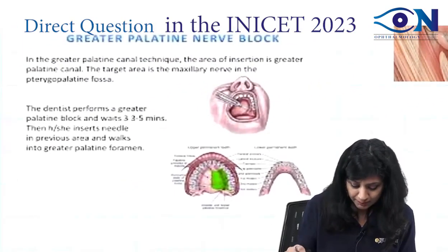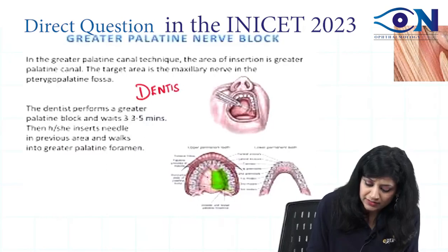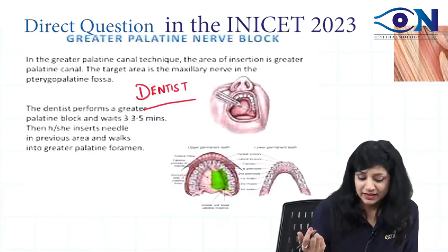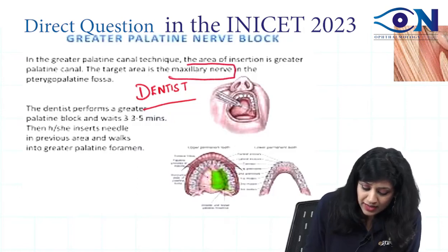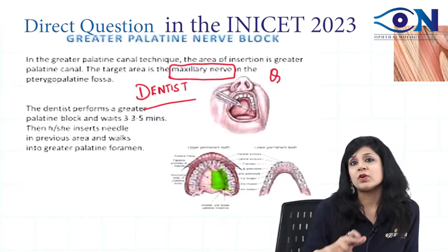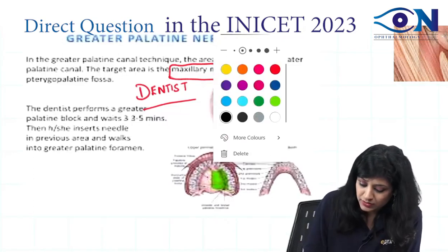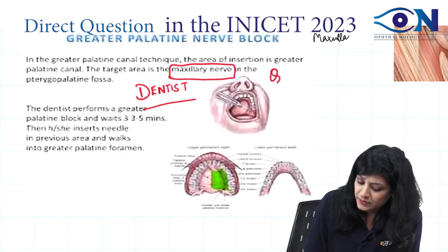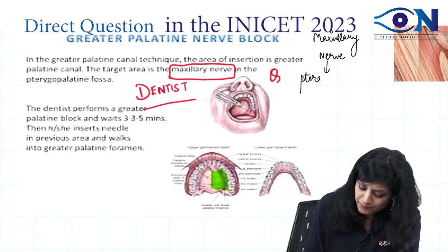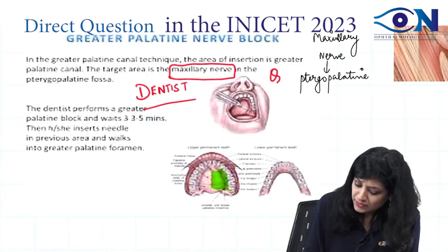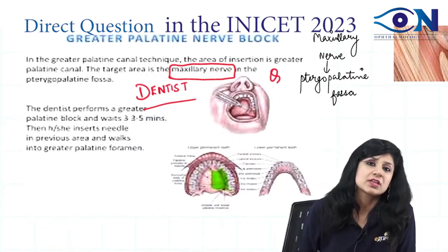Then we have got the greater palatine. The greater palatine block is the one which is given by the dentist. What is the target area when you are going for the greater palatine? Your target is your maxillary nerve. This question can also be asked: which nerve and what is the location we are targeting? In cases of the greater palatine nerve blockade, we are targeting the maxillary nerve in the pterygopalatine fossa, performed by the dentist.